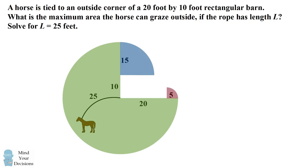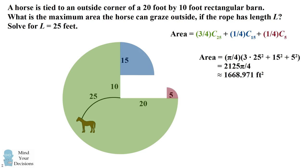The maximum area that the horse can graze will be the sum of these three different shapes. The area will equal the area of 3 quarters of a circle with a radius of 25, plus 1 quarter of a circle with radius 15, and 1 quarter of a circle with a radius of 5. We can use the formula for the area of a circle and find out that this simplifies to be 2125 pi divided by 4, which is approximately 1668.971 feet squared.